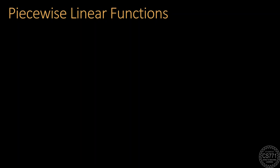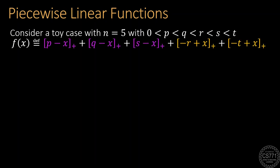To see this at work, let us take a toy example where there are only five terms in the summation. Three corresponding to positively labeled points and two corresponding to negatively labeled points. The constant values in these terms are p, q, r, s and t that have been sorted in increasing order for sake of simplicity.